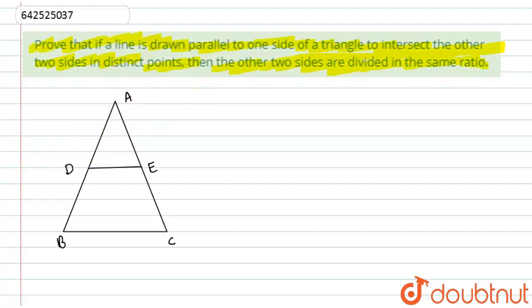For that, I have drawn a triangle, angle ABC. Here is the line DE which is parallel to BC. So let's start with the solution.